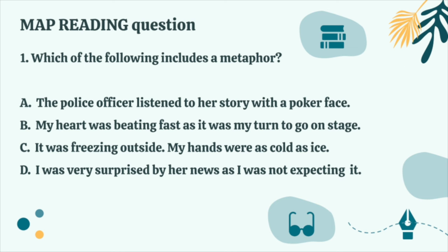Let's try option B: 'My heart was speeding fast as it was my turn to go on stage.' Here someone is feeling nervous about going on stage, but we're just describing a feeling, not really comparing two different things in a metaphorical way. Option C: 'It was freezing outside. My hands were as cold as ice.' This one uses 'as cold as ice' to describe the hands, which makes it a simile.